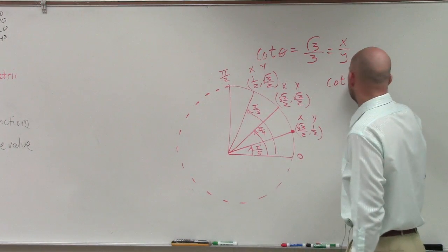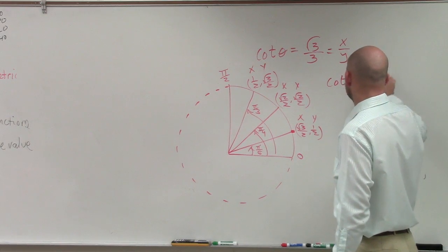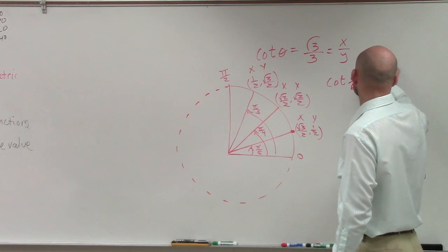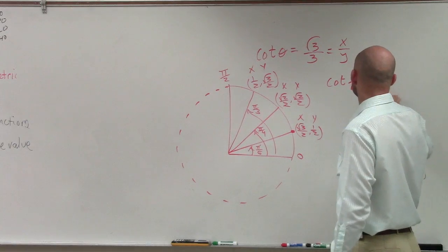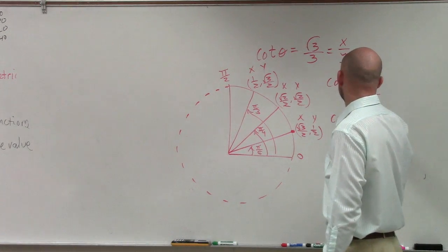So the cotangent of pi over 6 would be square root of 3 over 2 divided by 1 half. The cotangent of pi over 4